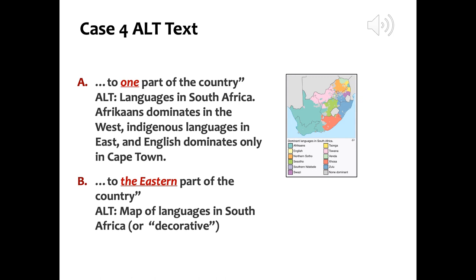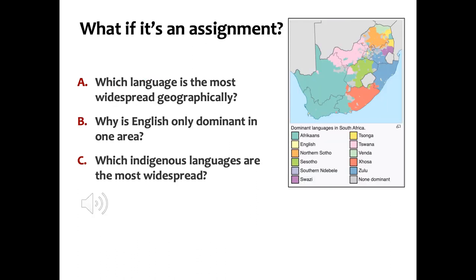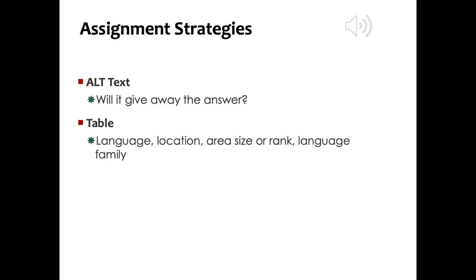But sometimes a map is included as part of an assignment. In this case, it's important to provide the information but not give away the answer. Here are some sample questions that could be asked: Which language is the most widespread geographically? Why is English only dominant in one small area, Cape Town? Which indigenous languages are the most widespread? Alt text may be used for one question, but again, it could give away the answer. A table with relevant information such as relative size, area, location, and other information could provide what the student needs in the right way.